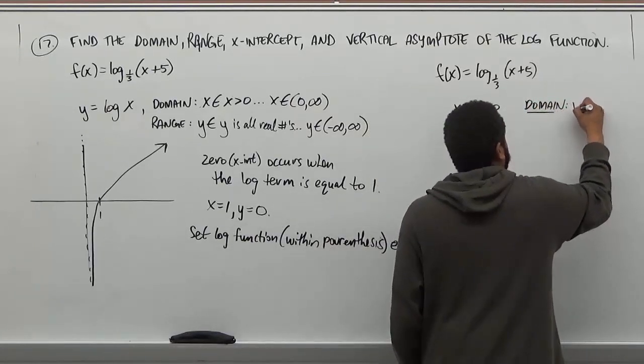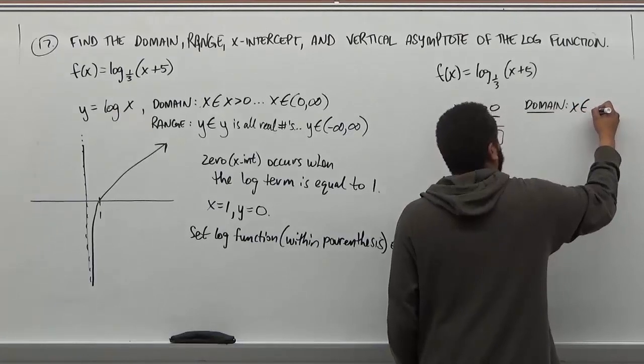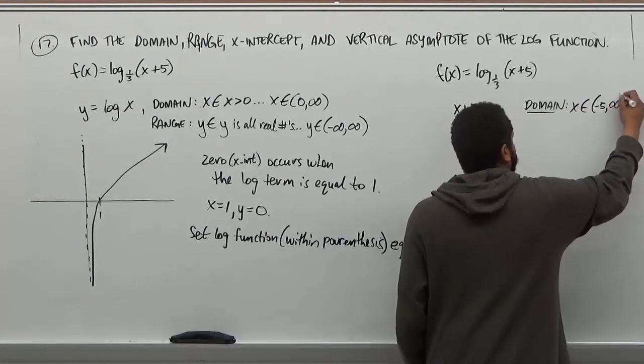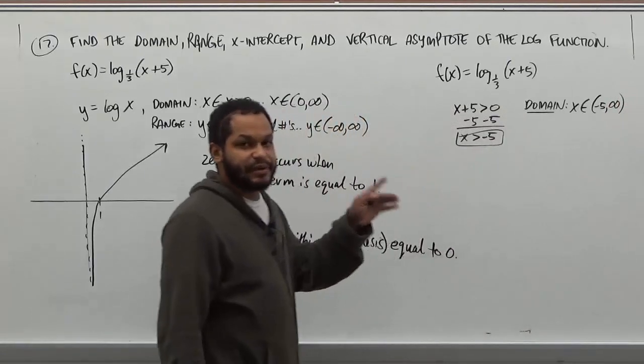So the domain would be x belongs to, and this is going to go from -5, not included, to infinity because it says x has to be greater than -5.